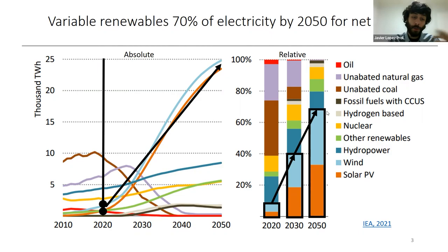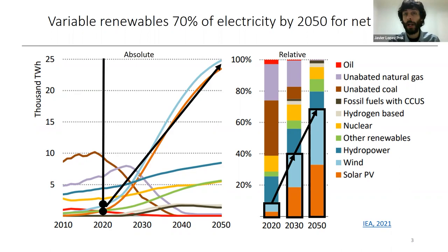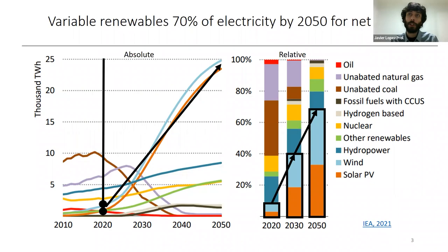This is even stronger if we take into account that we will go through a process of electrification as well. It's not only the share that is increasing, but the total amount of electricity will have to increase as well — both in developing and in developed countries — because we have to electrify sectors that before were run with other fuels such as gas, oil, and coal. We are living two processes at the same time: on the one hand electrification of those sectors, and at the same time a transformation within the electricity sector itself to switch towards variable renewables.